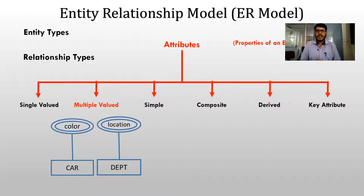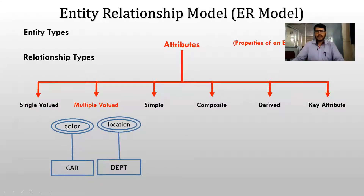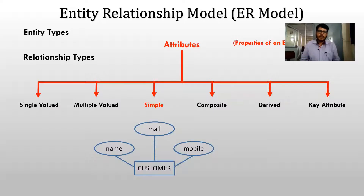Now let us see what we mean by simple attribute. A simple attribute is any attribute which accepts a simple value and a single value. For example, name of the customer, email address of the customer, mobile number, etc. We are not combining more than one value here — we accept only a single, simple value. There is no difference between single-valued and simple-valued attributes.